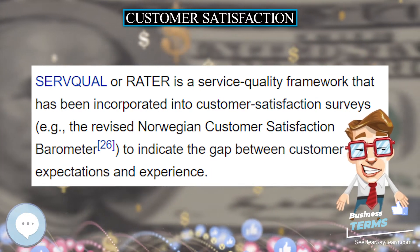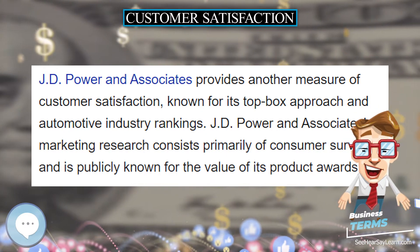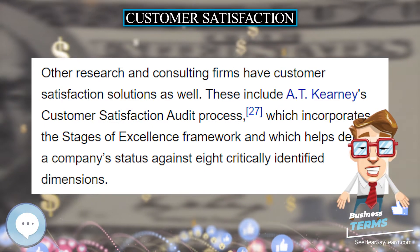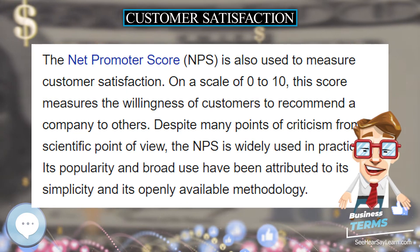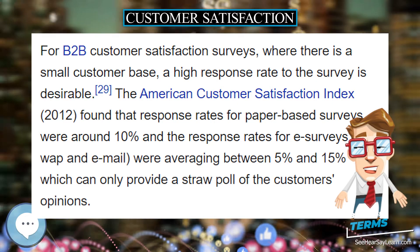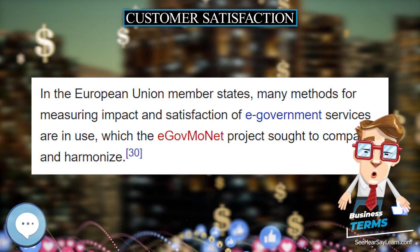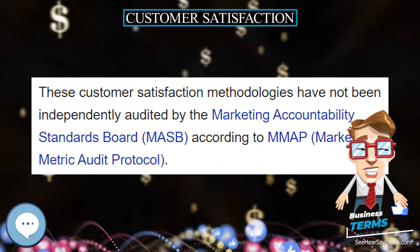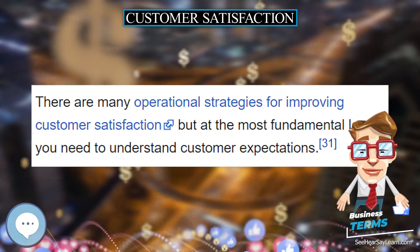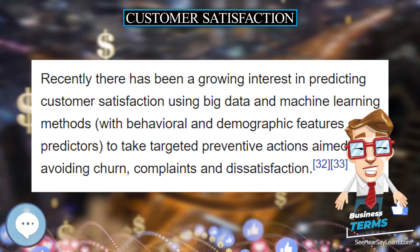A customer's expectations about a product tell us how he or she anticipates how that product will perform. Consumers may have various types of expectations when forming opinions about a product's anticipated performance. For example, four types of expectations are identified by Miller, 1977: ideal, expected, minimum tolerable, and desirable. While Day, 1977, indicated among expectations the ones that are about the costs, the product nature, the efforts in obtaining benefits, and lastly expectations of social values.